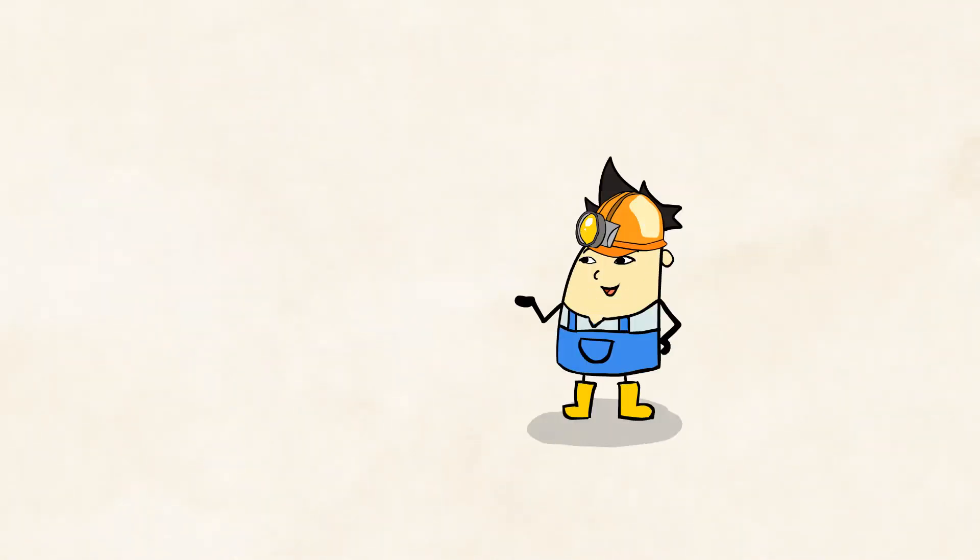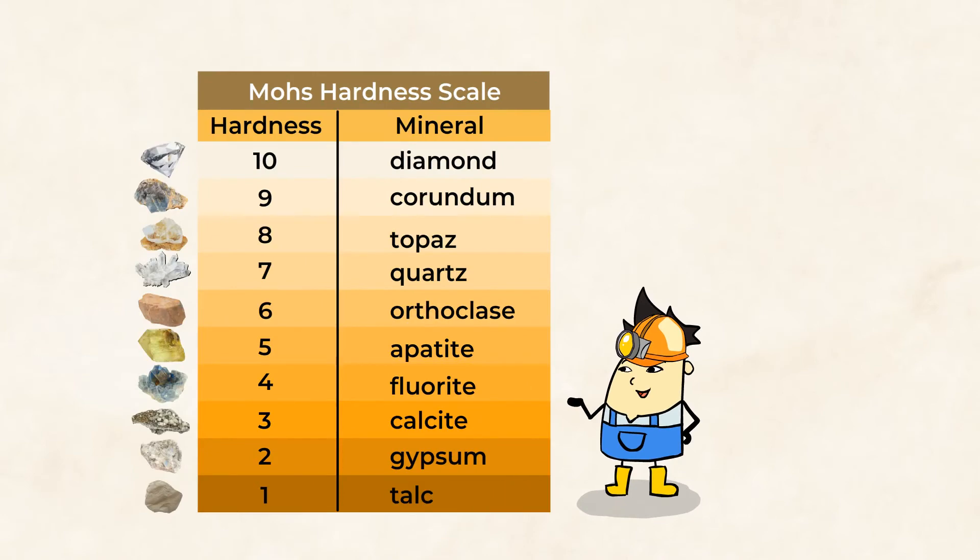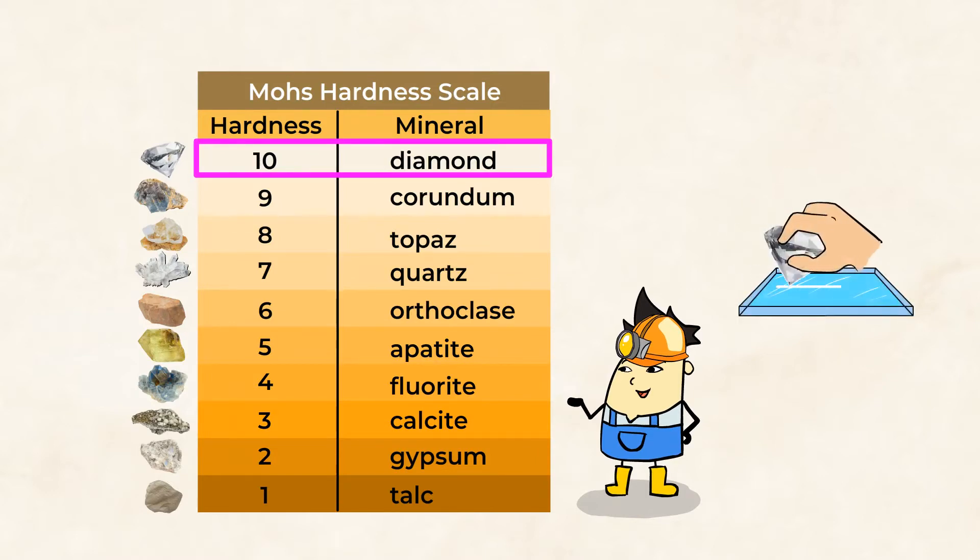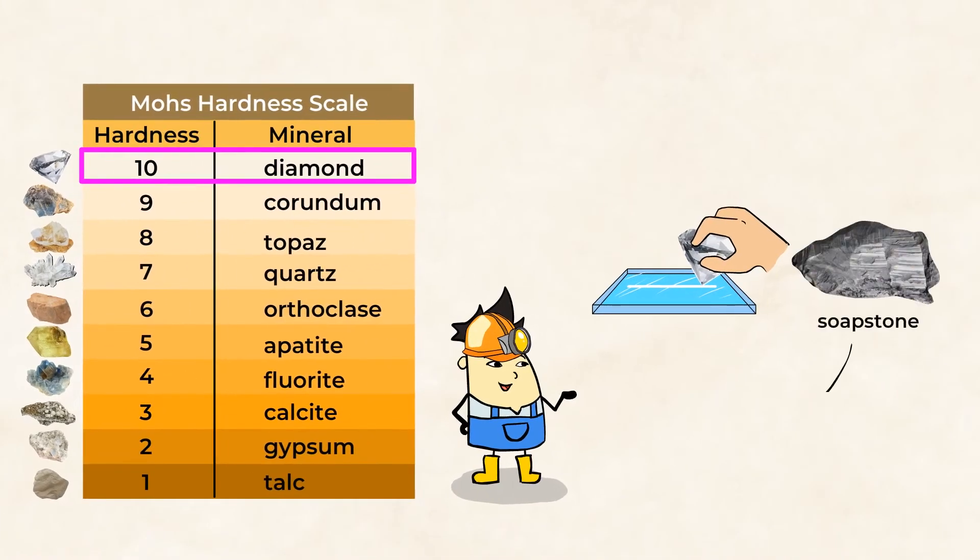Scientists use a scale to rate the hardness of rocks and minerals called the Mohs hardness scale. For example, diamonds are the hardest natural material on the earth. That's why they're at the top of the hardness scale. Soapstone, on the other hand, is a very soft rock that you can scratch with just your fingernail.